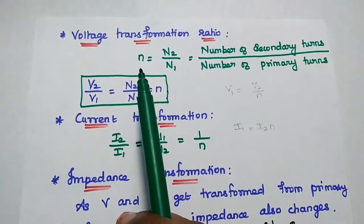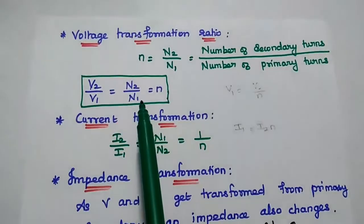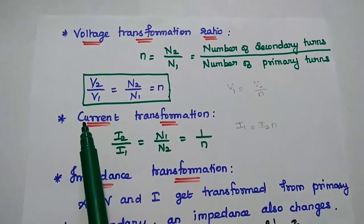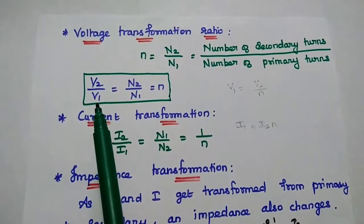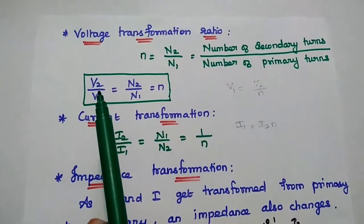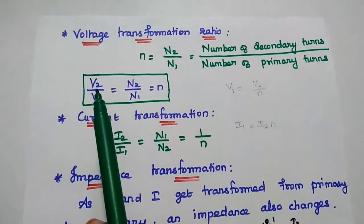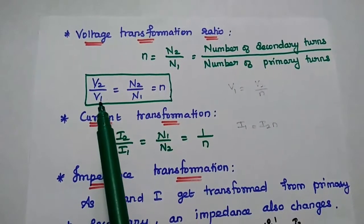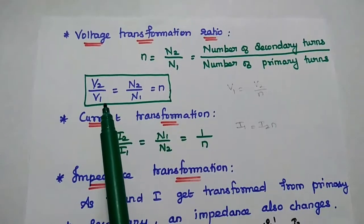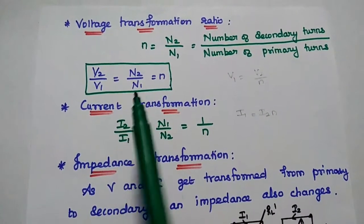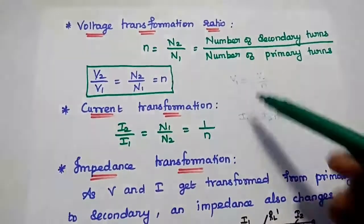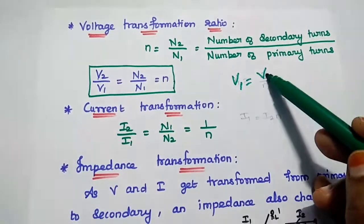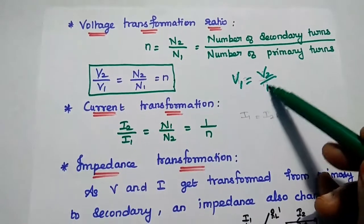It is represented as small n. n is equal to N2 by N1, which is also equal to V2 by V1, where V2 is the voltage at the secondary winding and V1 is the voltage at the primary winding. From this, we can get the value of V1 is equal to V2 by n.